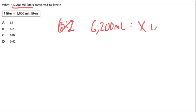And welcome. In this video, we're converting from 6,200 milliliters to some amount X liters. So we're going from milliliters to liters. And they're telling us again that 1 liter is equal to 1,000 milliliters.